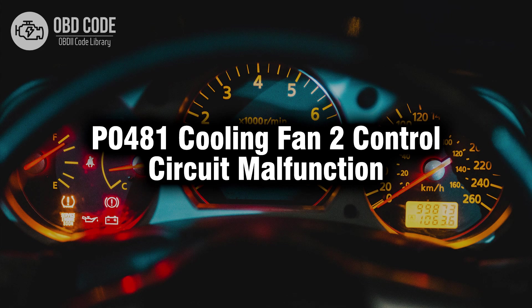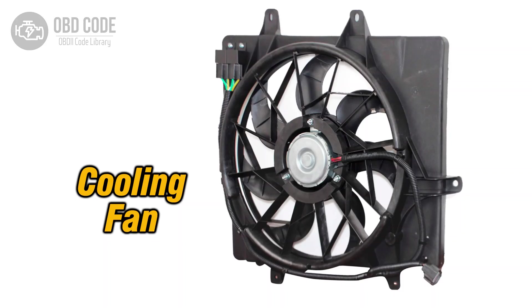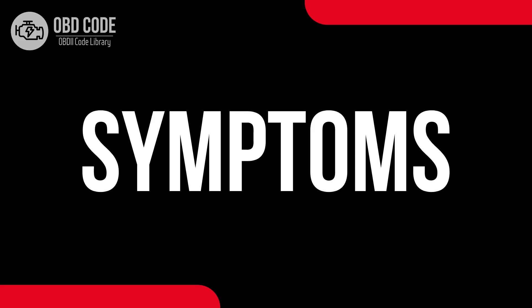Welcome. In this video we will talk about code P0481, its symptoms, causes and possible solutions. The P0481 trouble code indicates a malfunction in the control circuit of cooling fan 2. This code is typically triggered when the engine control module (ECM) detects an issue with the circuit responsible for controlling the operation of the second cooling fan.